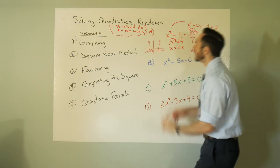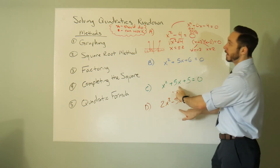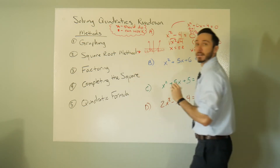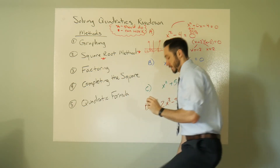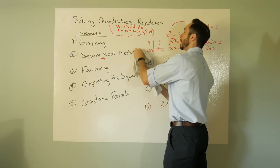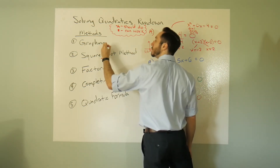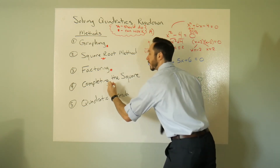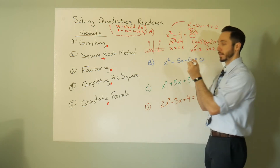So when you have a lack of a linear term — like x² minus some number — you should do the square root method. That's the winner here. But graphing, factoring, completing the square, and quadratic formula can all work too. You should probably use the square root method for this type.